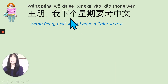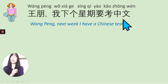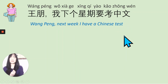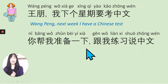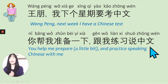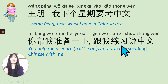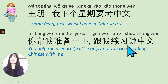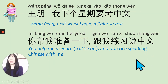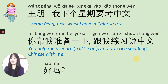王朋友在. 我下个星期 — 下个 means next, 星期 means week — 下个星期 means next week. 要考中文 — have a Chinese test. 你帮我 — you help me. 准备一下 — to prepare a little bit. 跟我练习 — 跟我 means with me, 练习 means to practice. 说中文 — speaking Chinese. So: you help me prepare and practice speaking Chinese with me. 好吗 — OK?